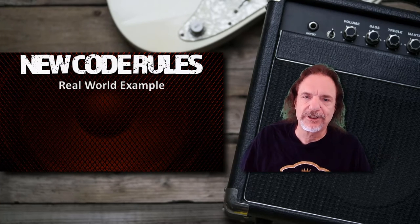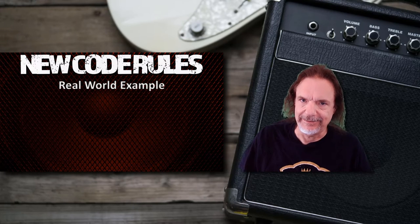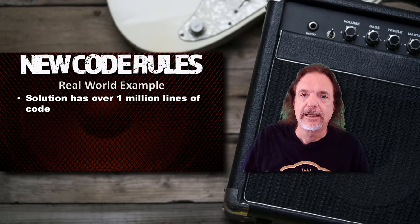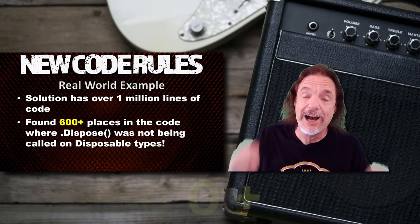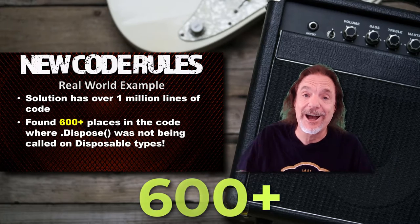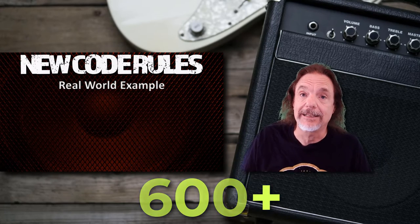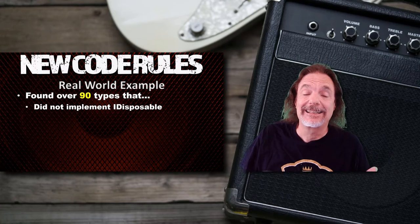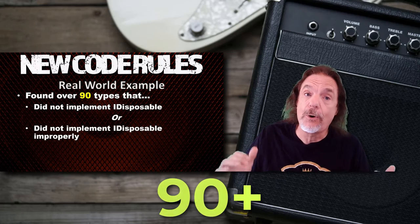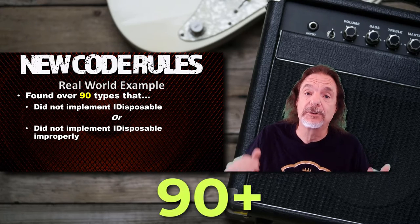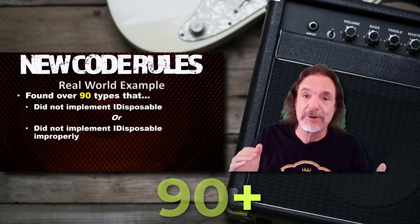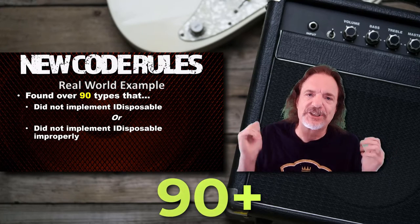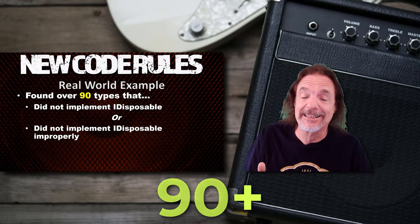I'm about to give you a real-world example. The solution I'm going to talk about has a little over one million lines of source code. In that code base I found over 600 places where dispose was not being called correctly on disposable types. On top of that, I found 90 classes that did not implement IDisposable when they needed to, or did not implement IDisposable properly. Some classes did implement IDisposable, but not a single one did it correctly.